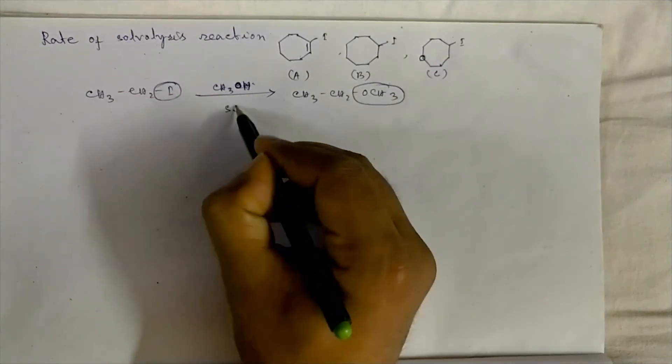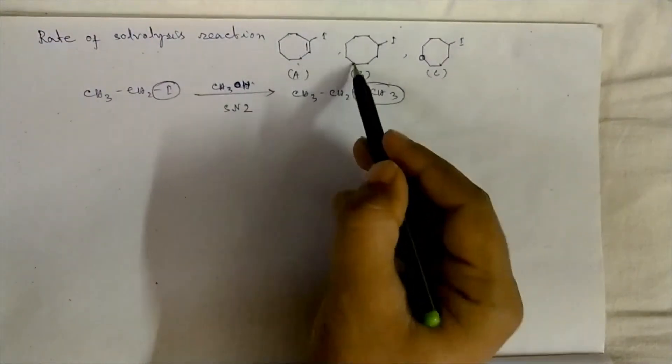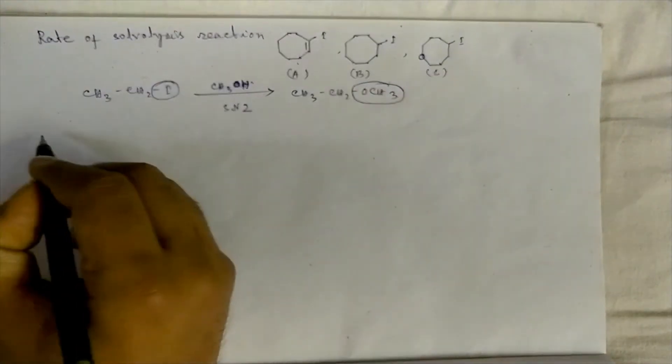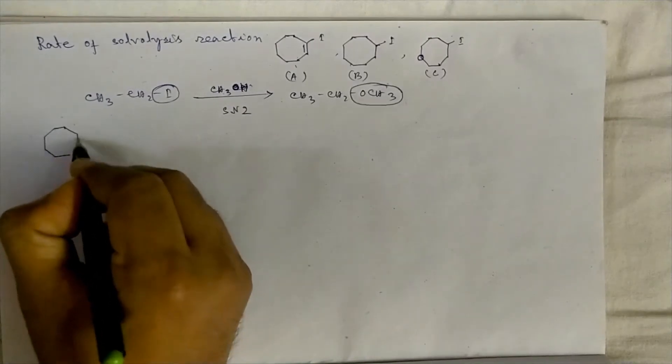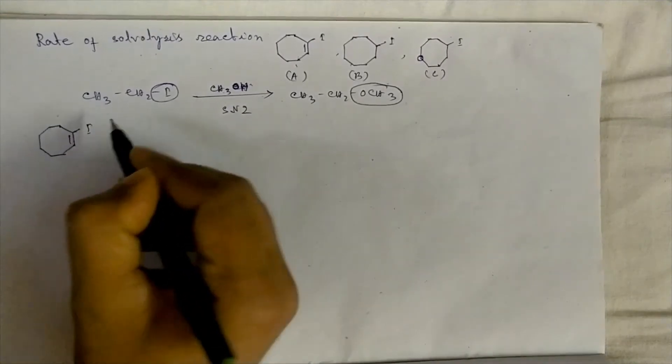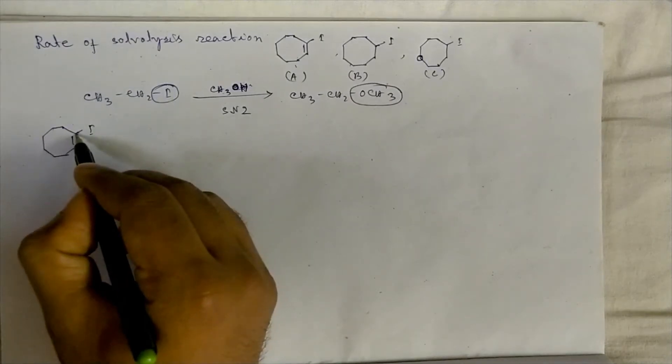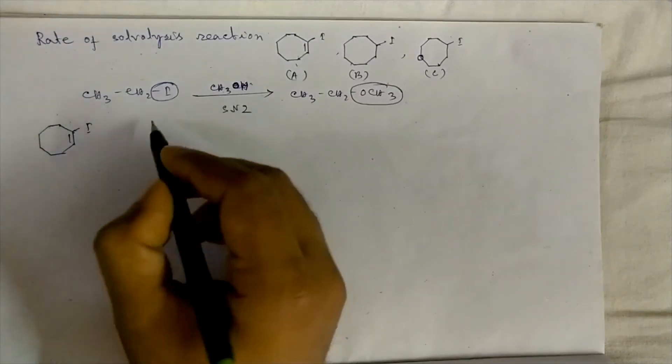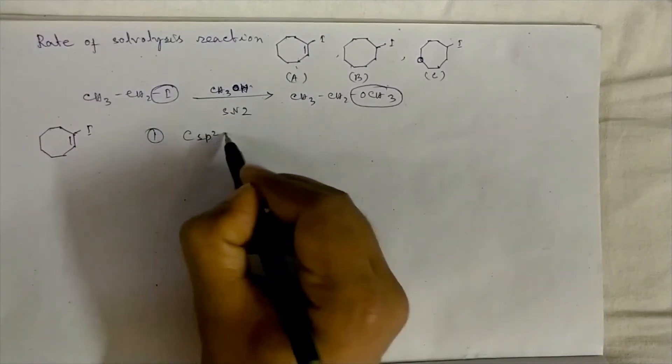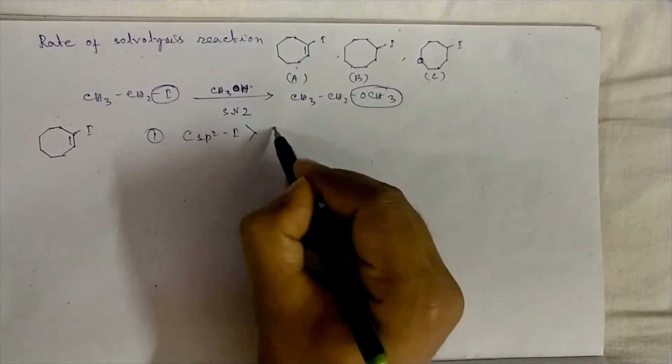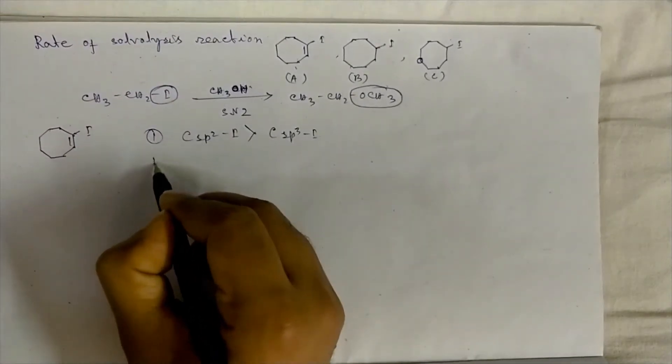it proceeds through SN2 mechanism. If we see these three substrates, the first one has the iodide atom connected to one sp2 hybridized carbon atom. We all know that C(sp2)-I bond is stronger than C(sp3)-I bond, as well as